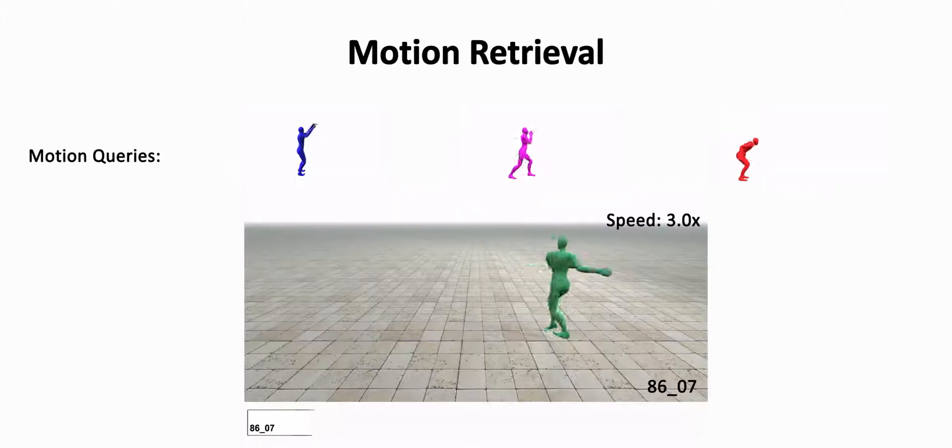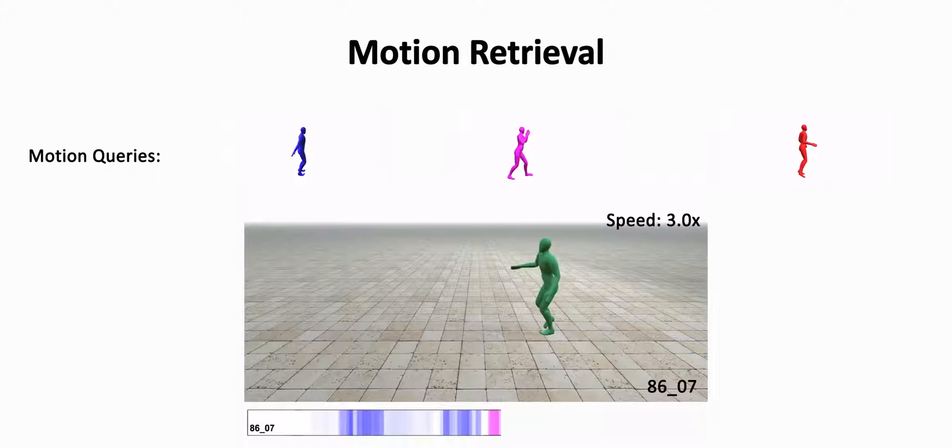Searching for motions in large collections is needed to facilitate recognition and reuse of existing data. In the following examples, we show instances of motion retrieval using our method.